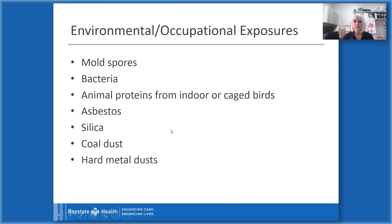Environmental and occupational exposures can include anything from mold spores, bacteria, and animal proteins. The biggest offender for animal proteins are birds — indoor or caged birds — where proteins from their droppings become dried and airborne, and if breathed in can lead to interstitial lung disease. Asbestos, silica, coal dust, and hard metal dust are also exposures that can lead to interstitial lung disease.